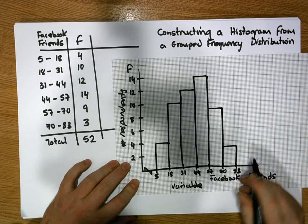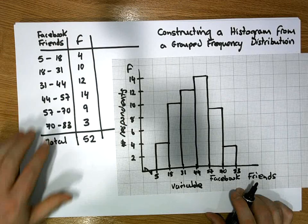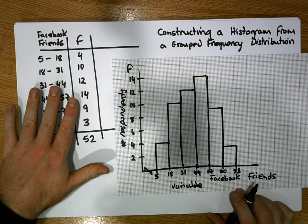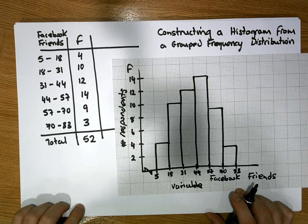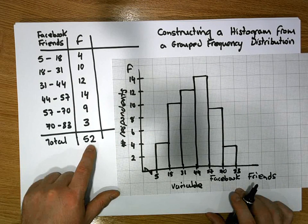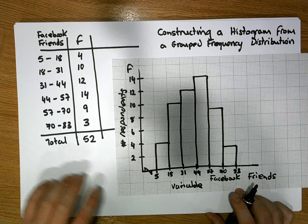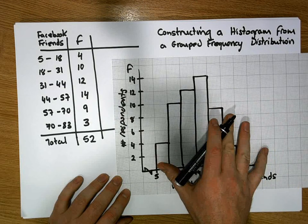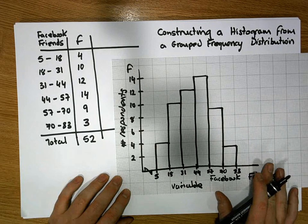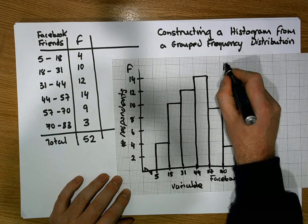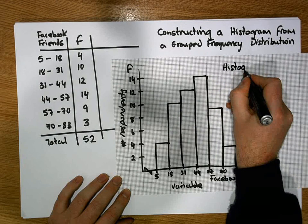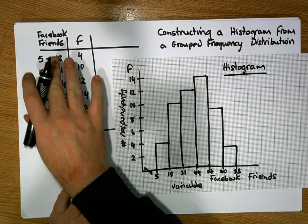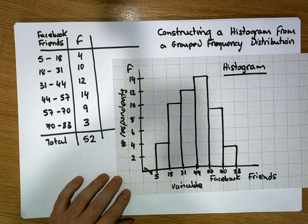A histogram is just another representation of our distribution. In this particular situation here, our distribution is represented in a table, which we call a grouped frequency distribution. These 52 values could be represented as raw data. That's still the distribution, but it's raw data. In this situation here, it's represented in a chart. And this chart is a histogram. And it's straightforward to create a histogram once we have the grouped frequency distribution.